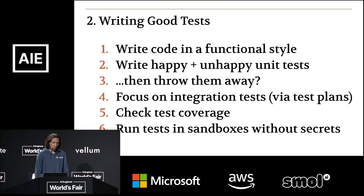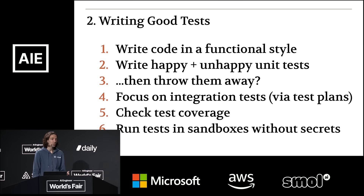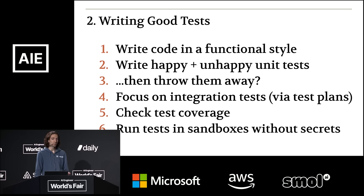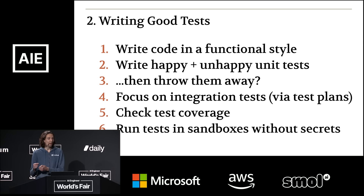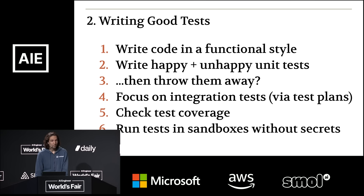Second, write two different types of unit tests. Happy path unit tests show that your code is working — you don't need many of those. Unhappy unit tests are the ones that help find bugs, and LLMs can be really helpful here. Especially if you've written code in a functional style, you can have the LLM generate hundreds or even thousands of potential inputs, see what happens, and ask the LLM if the output looks weird. When it says yes, that will often be a bug, and now you have a perfect test case replicating it.